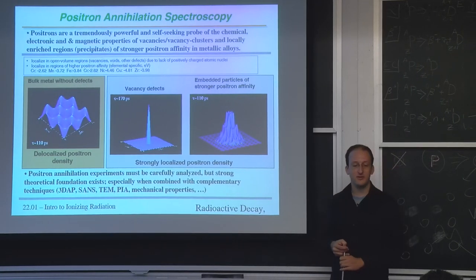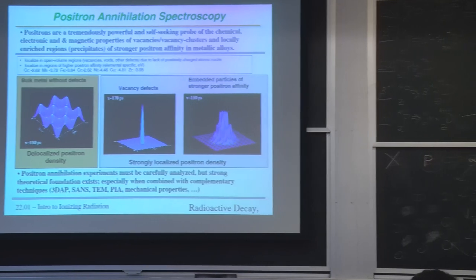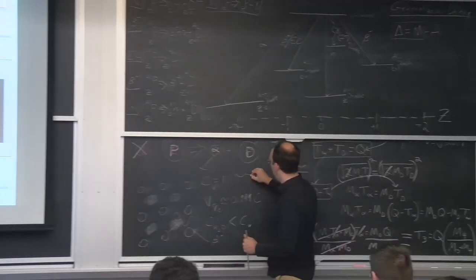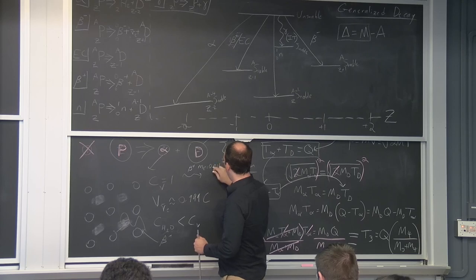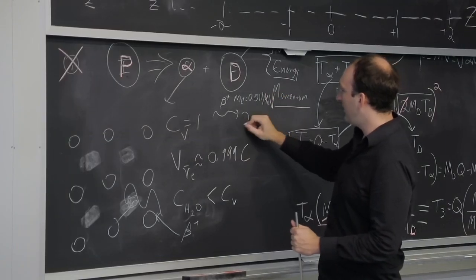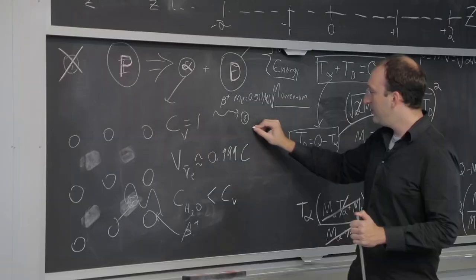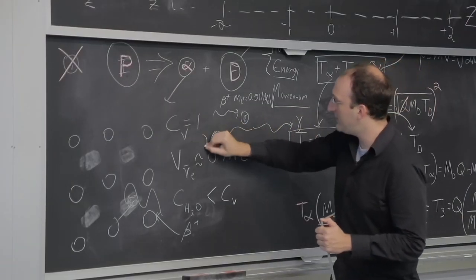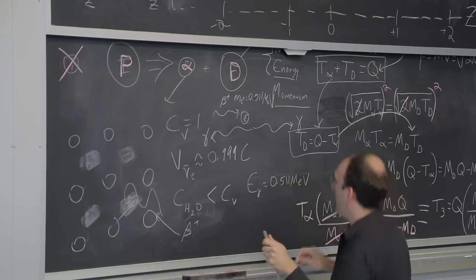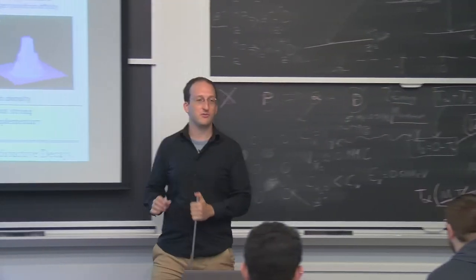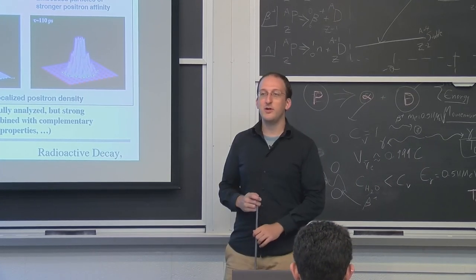If you were to fire a positron into this matter, how long would it sit and bounce around before colliding with an electron and releasing that extra rest mass energy? It turns out if you have crystalline defects, the positrons tend to last a little longer. There's a little more empty space. And you can measure the lifetime of positrons before they produce their characteristic destruction gamma rays.